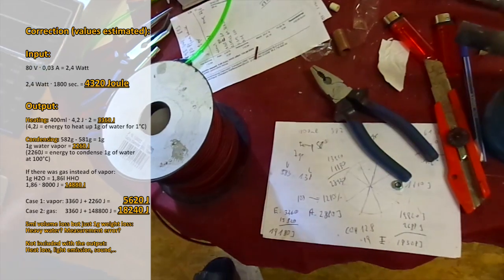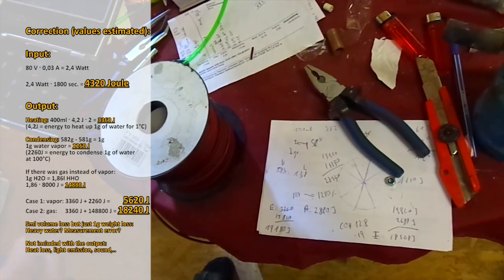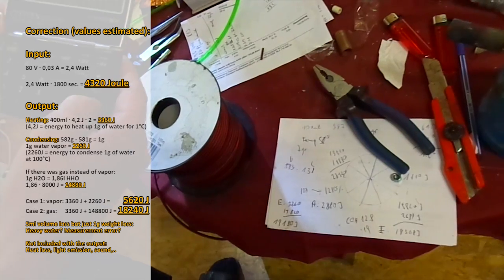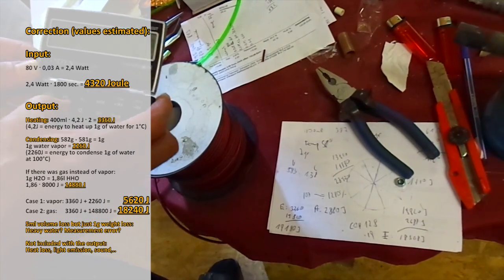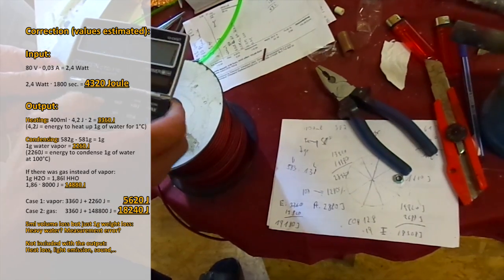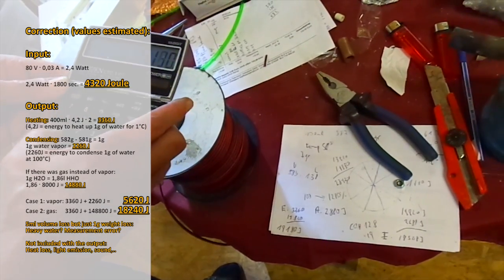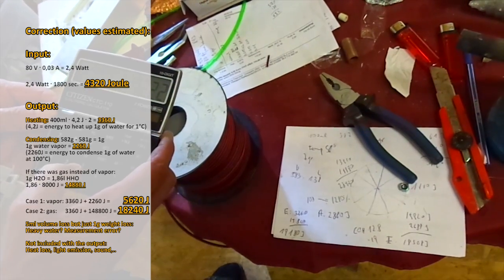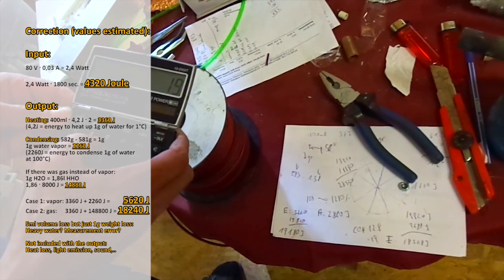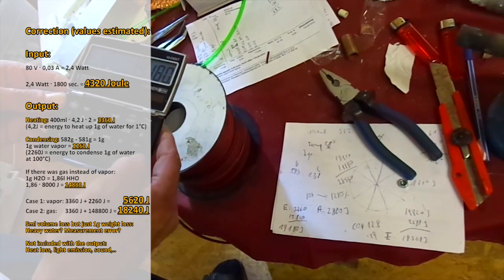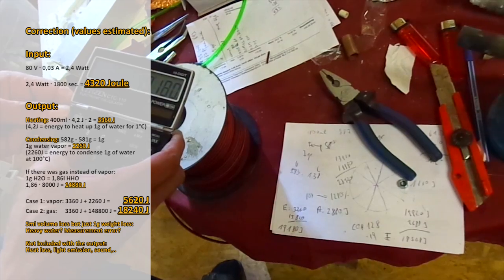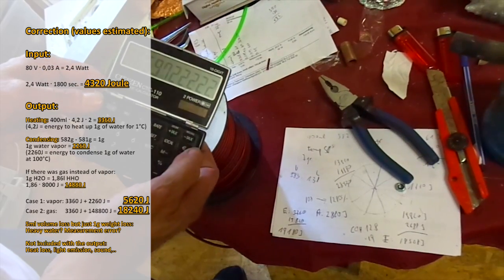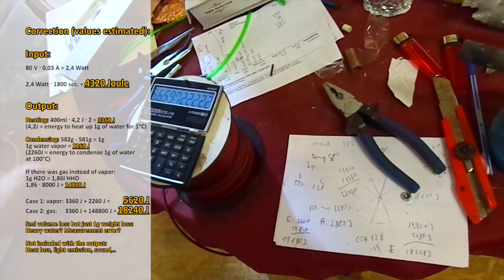15,820 J plus 3,260 J equals 19,180 J of output. That is 10 times more output. Now, how to calculate the efficiency? Divide output by input. 19,180 divided by 2,880. That is 6.65 coefficient of performance. That's a COP of 6.65.